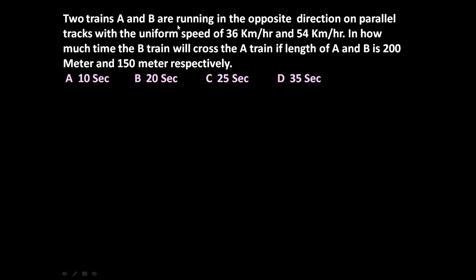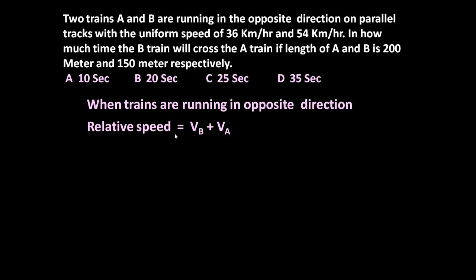Here the important point is A and B are running in opposite direction. This is important. So the relative speed between A and B will be equal to VB plus VA. Just addition. When they are in opposite direction, the speed between the trains will be treated as VB plus VA.